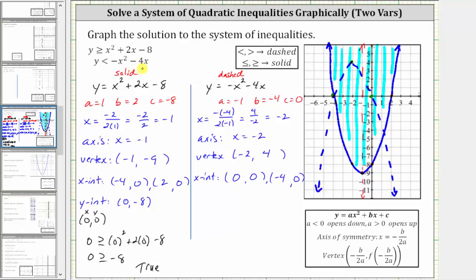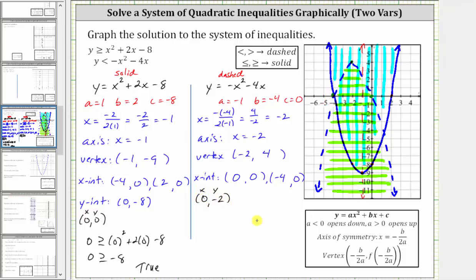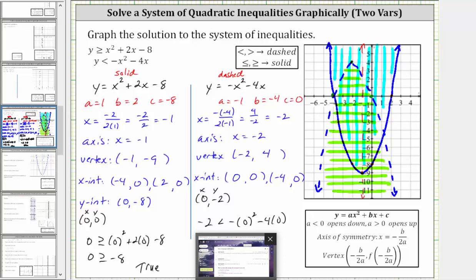We shade the solution to the second inequality. Because we have y is less than, we shade below the vertex of the dashed parabola — inside the parabola. This green region is the solution to the second quadratic inequality. To verify, we select the test point zero comma negative two. Substituting gives negative two is less than the opposite of the square of zero minus four times zero, which simplifies to negative two is less than zero — true. We graphed the solution to the second inequality correctly.